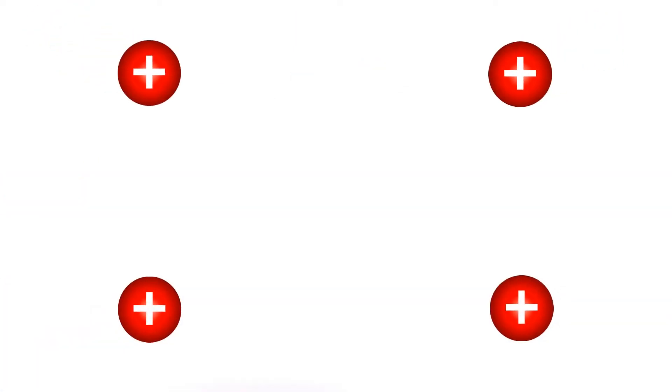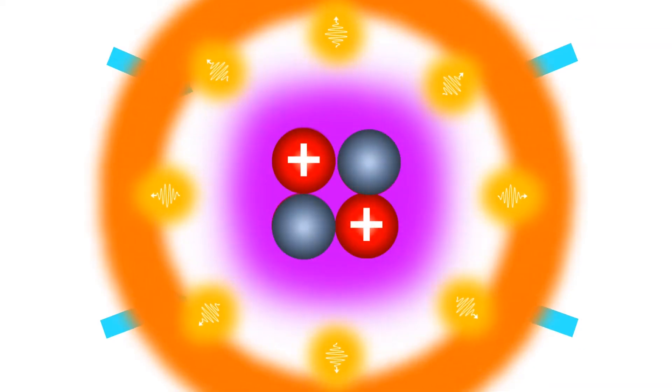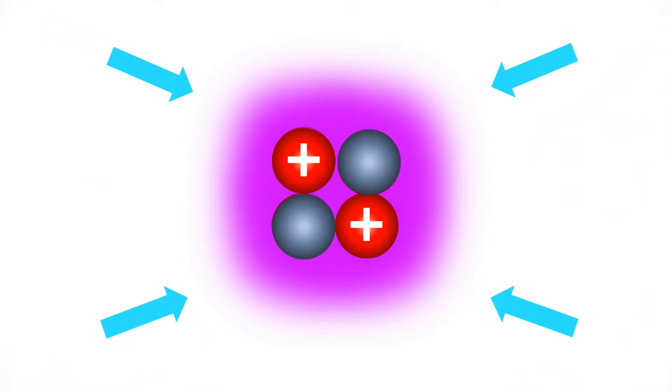This pressure in our Sun forces four hydrogen nuclei close enough for the strong force to take over. They then fuse into a helium nucleus, releasing huge amounts of energy.